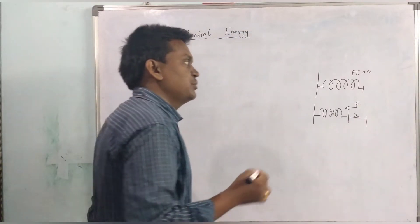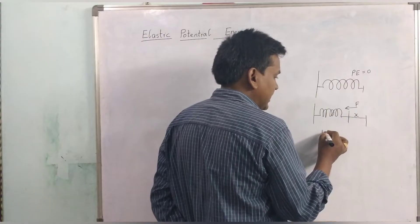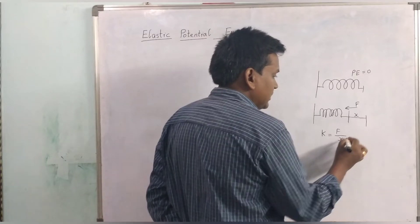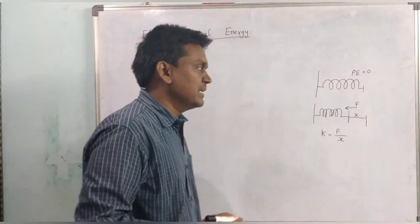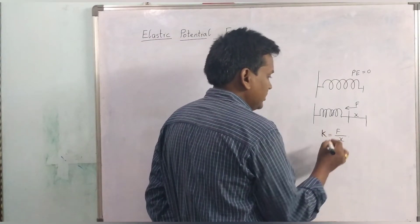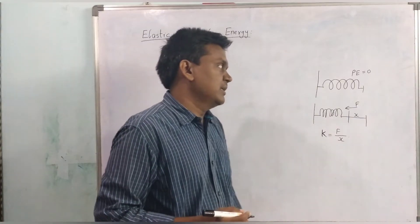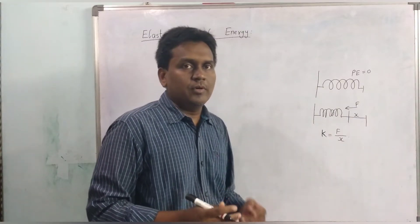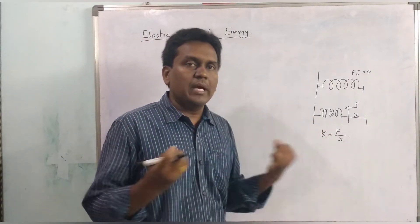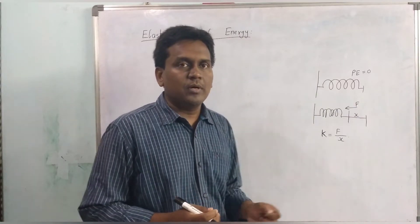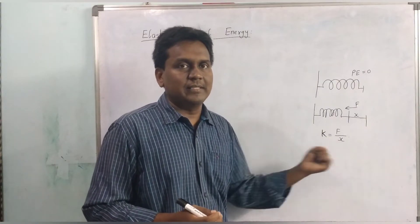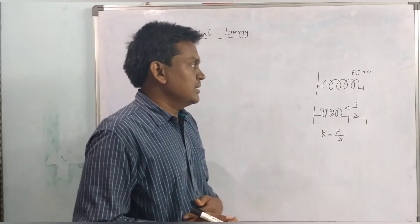The spring constant of the spring is given as spring constant k equal to force upon the distance how much the spring is compressed — force F by x. The spring constant is the amount of force which is used on the spring to compress it or to elongate it by some amount of length x. That is called the spring constant.